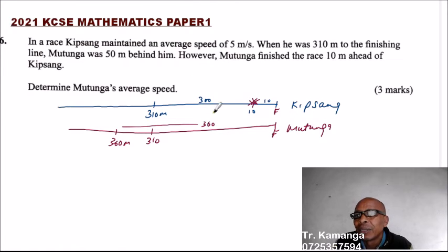Mutunga covered this 300. We have been given the speed of Kipsang. It is 5 meters per second. So, let the speed of Mutunga be X.